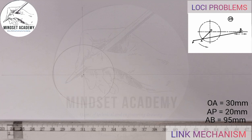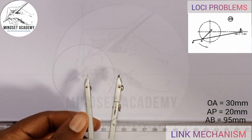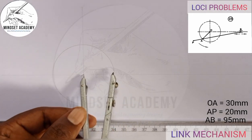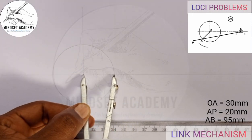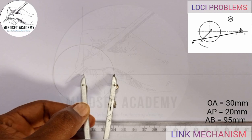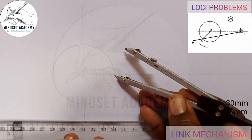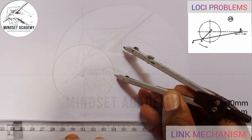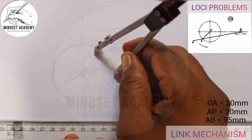Now I'm going to divide the circle into 12 equal parts. I'll take the radius OA and place it at each point along the circumference, marking up. I'll come here also and mark up, then place it at the uppermost point and mark right and left.